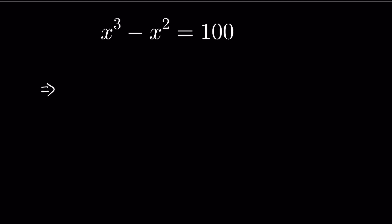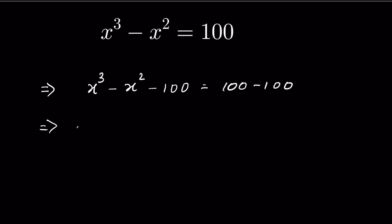If we subtract 100 from both sides, it will be x cubed minus x squared minus 100 is equal to 100 minus 100. So this is now x cubed minus x squared minus 100 is equal to 0.